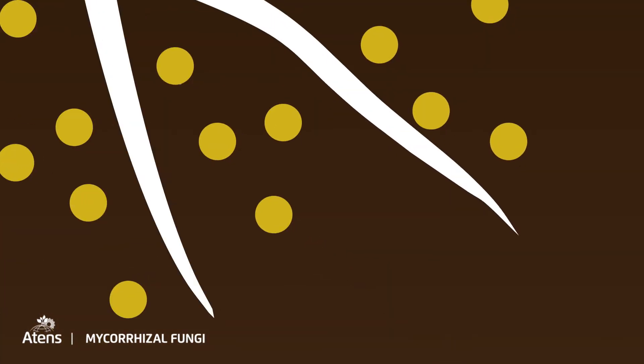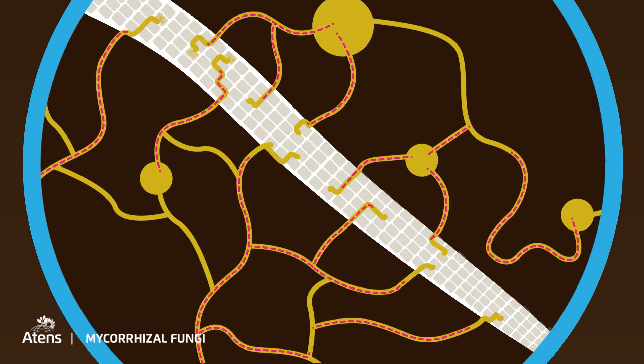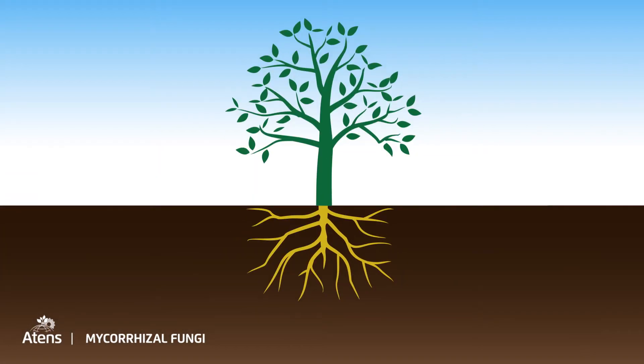From the spore, the hyphae grow, while the nuclei are replicated and flow through the interior of the hyphae. After reaching the root, the hyphae penetrate into it and form arbuscules inside their cells, creating a deep network of connections between the fungus and the plant.